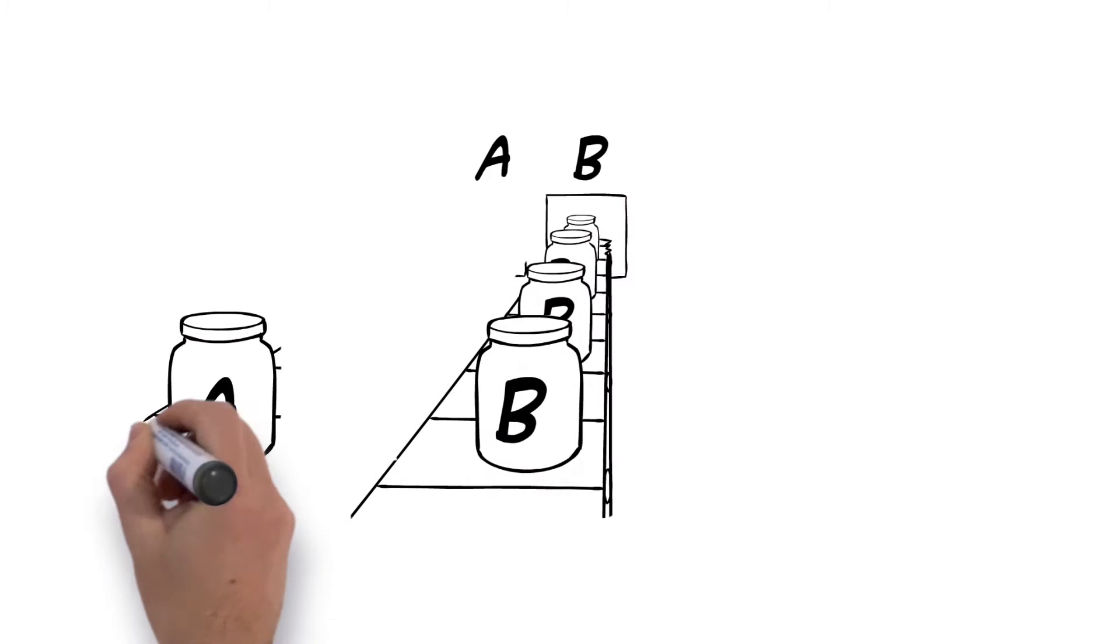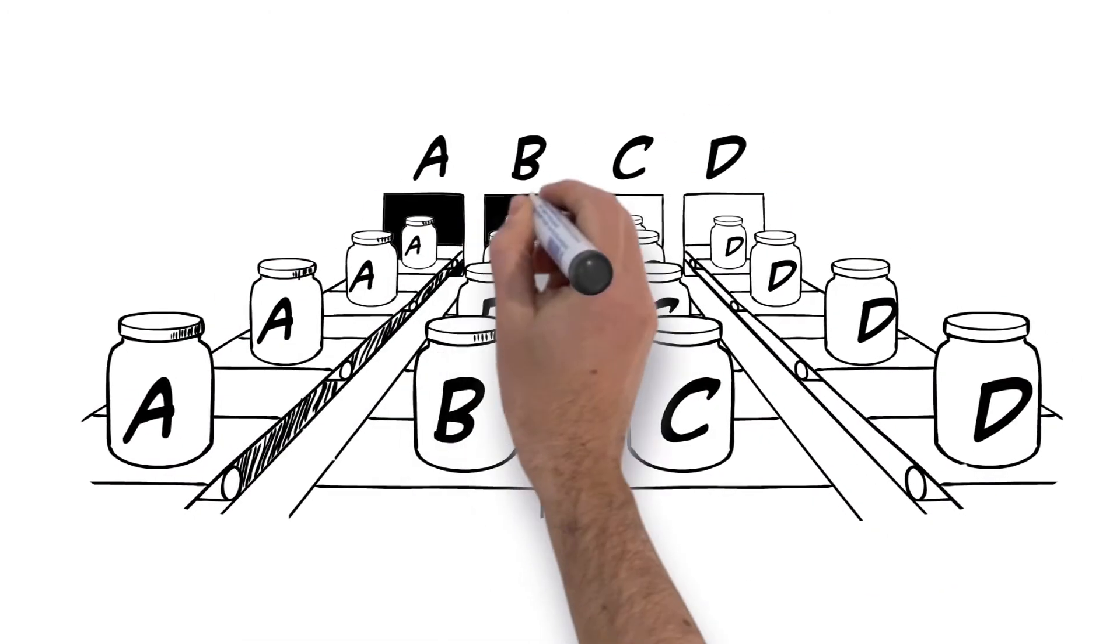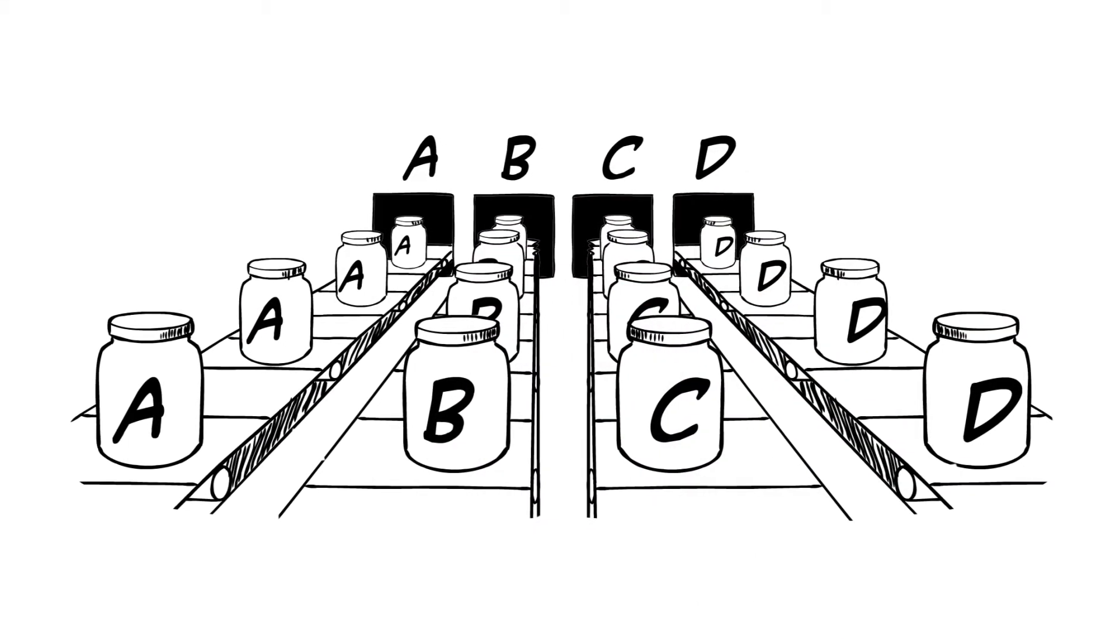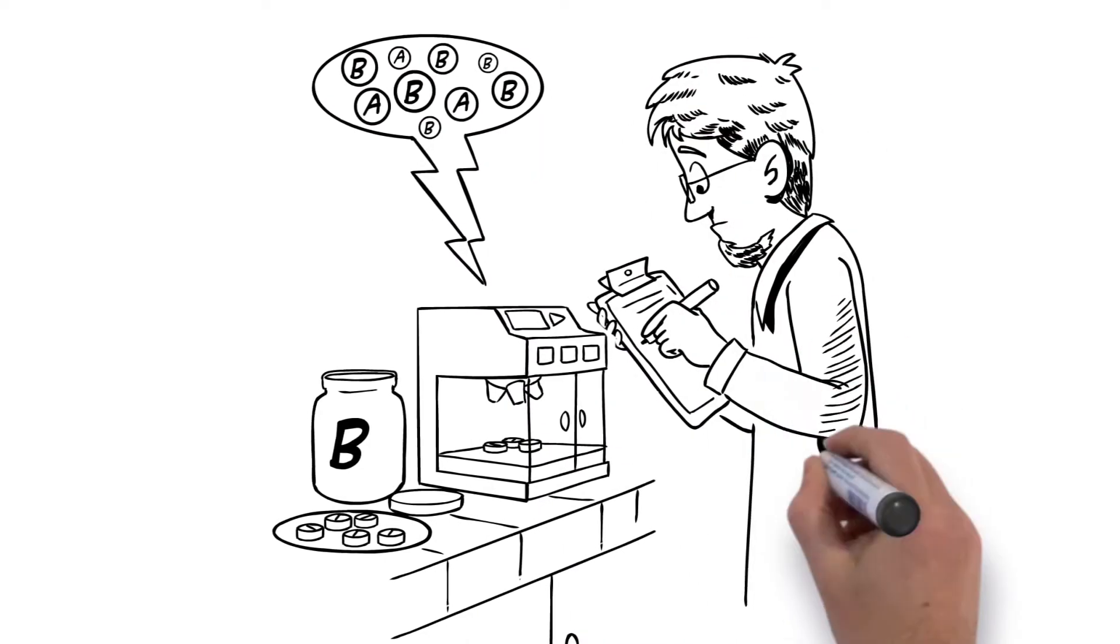While brand B may be respectable with the intention to be free of banned substances, traces of brand A may carry over if it was manufactured just before brand B using the same equipment. Bad news if brand A contained banned substances.